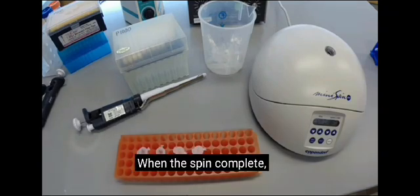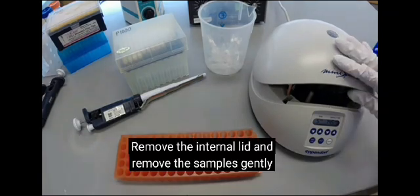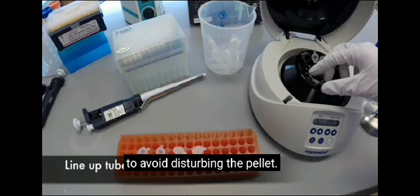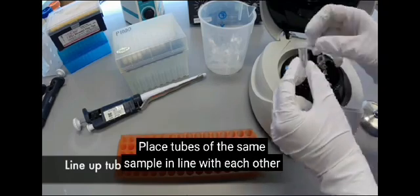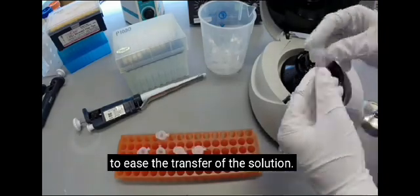When the spin is complete, the lid to the centrifuge will pop open. Remove the internal lid and remove the samples gently to avoid disturbing the pellet. Place tubes of the same sample in line with each other to ease the transfer of the solution.